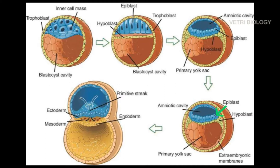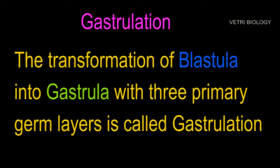At this stage, the epiblast and hypoblast layers are transformed into three germ layers: ectoderm, mesoderm, and endoderm. Hypoblast becomes the embryonic endoderm and epiblast becomes the embryonic ectoderm. The mesoderm is formed in between these two layers. The structure is now called gastrula, and this transformation of blastocyst into gastrula with primary germ layers is called gastrulation.